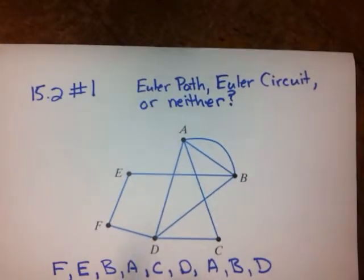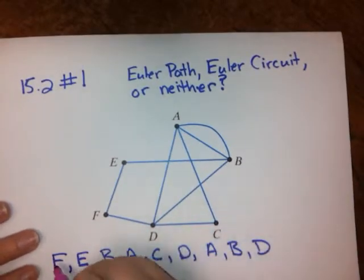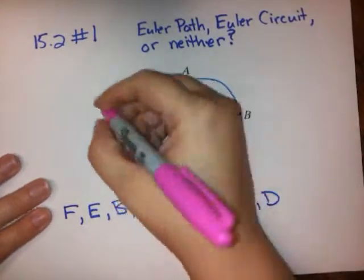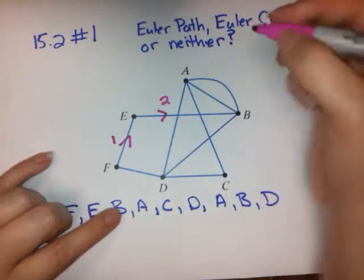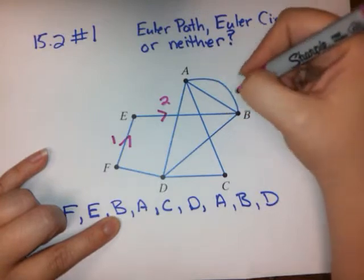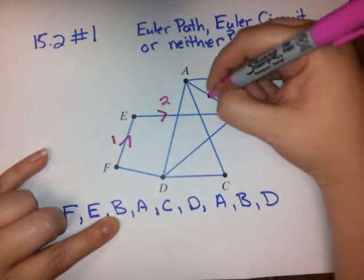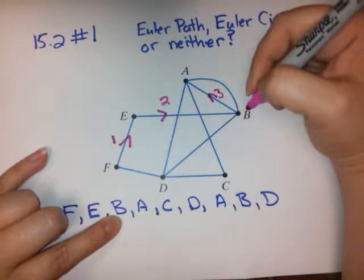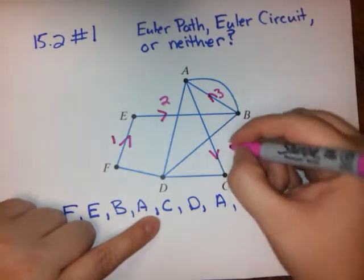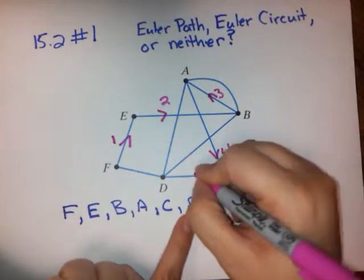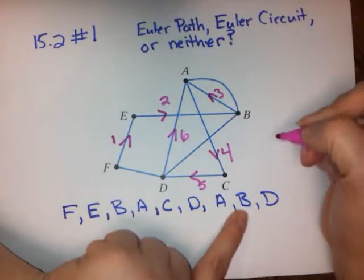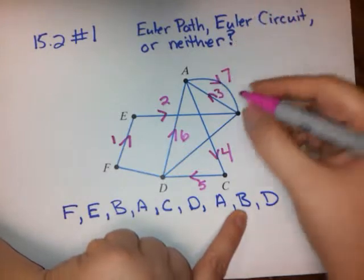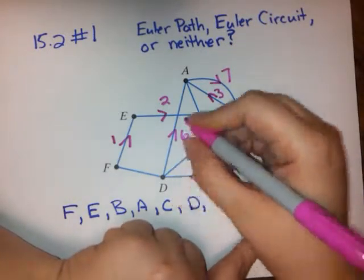Let's figure out which one it is by following the instructions. They've asked us to trace the path and number the edges. F to E with a 1, E to B with a 2, B to A — there are two different B to A edges, I'll pick this one — with a 3, A to C with a 4, C to D with a 5, D to A with a 6, A to B with a 7, and B to D with an 8.